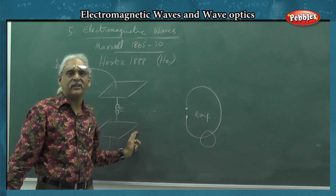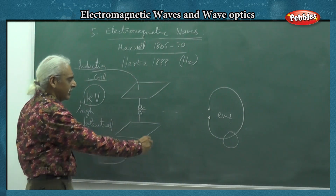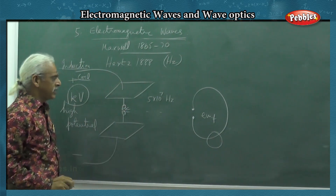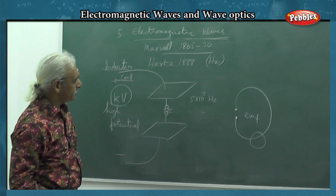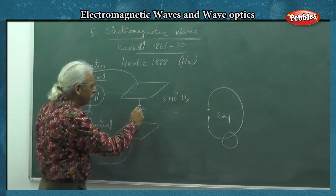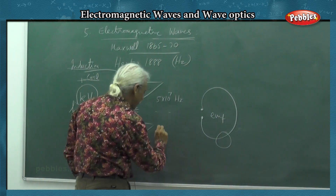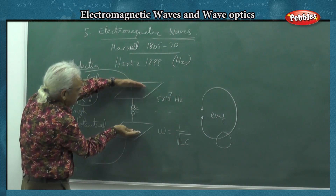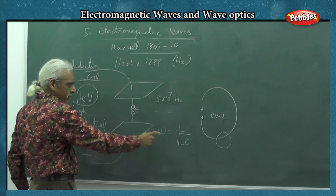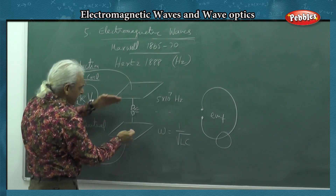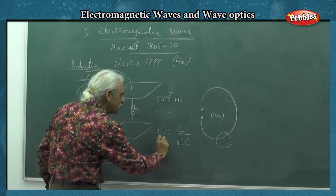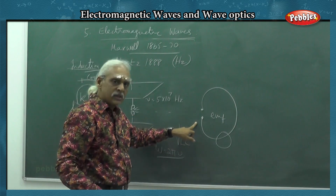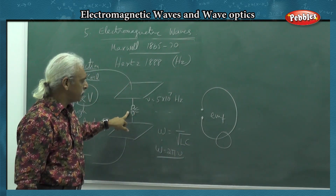The wave distributes and propagates outward. To create a specific frequency - around 5 times 10 to the power of 7 Hz - you need to think of it like a capacitor and an inductor. If you calculate the capacitance between the two plates and also the inductance, the resonant frequency is given by omega equals 2 pi nu. Using this, Hertz was able to detect that the electromagnetic wave from the spark reached his detector.